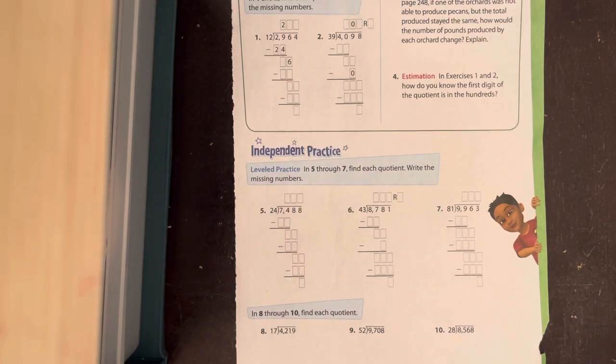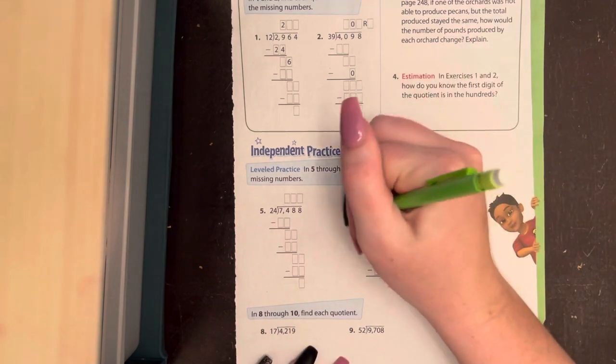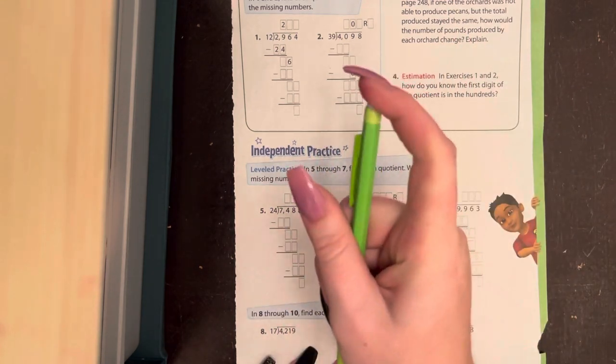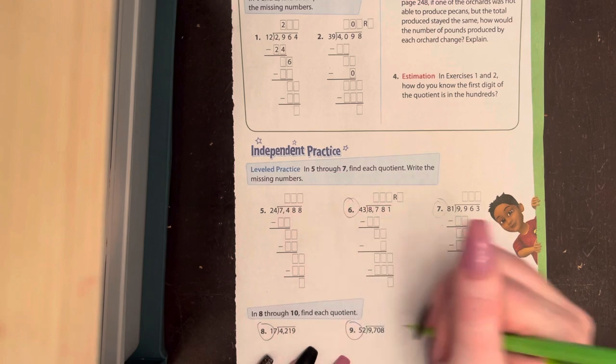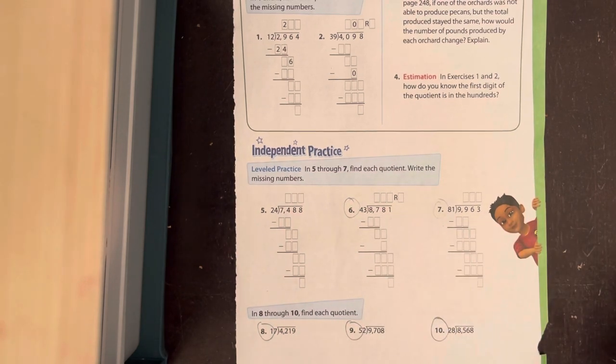Okay, we are on page 249, and remember you have to do 6, 7, 8, 9, and 10 for the independent station. So we're going to do number 7 together.